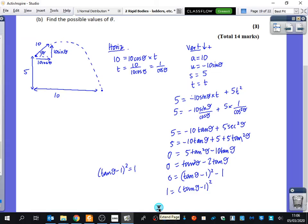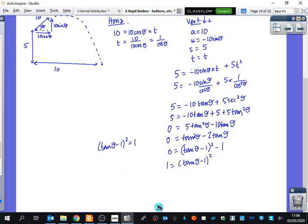Then all it wants us to do is to find the possible values of theta for part B. So we square root both sides. So you get plus or minus 1 equals tan theta minus 1. So tan theta equals 1 plus or minus 1. In other words, tan theta is equal to 0 or tan theta is equal to 2. Well, if you do the inverse tan of 0 you get 0. So 63.46, 63.5 or 0 degrees.